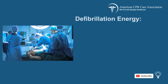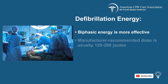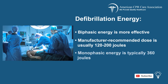Another thing to consider with the cardiac arrest algorithm is the energy for defibrillation. Biphasic energy is more effective during defibrillation and the manufacturer recommended dose is usually 120 to 200 joules. Monophasic energy is typically 360 joules.